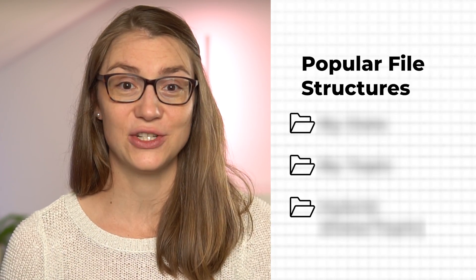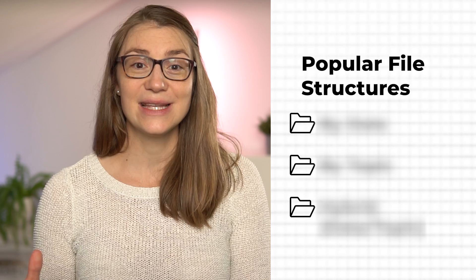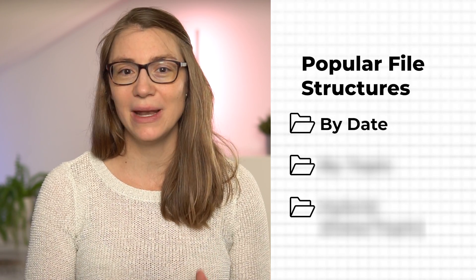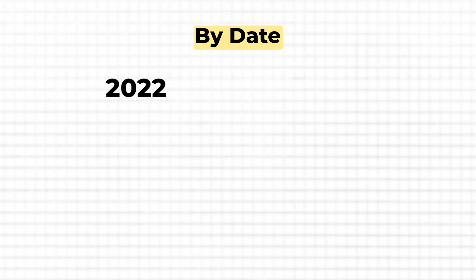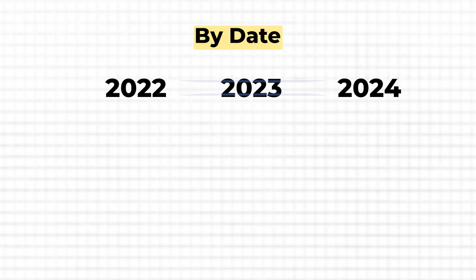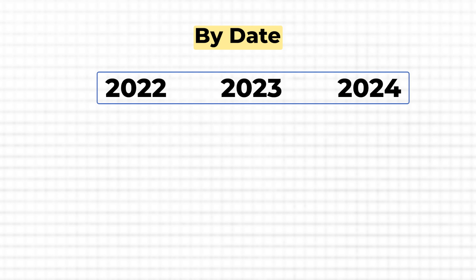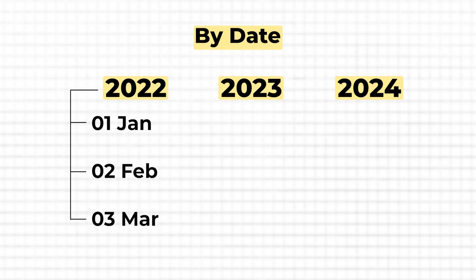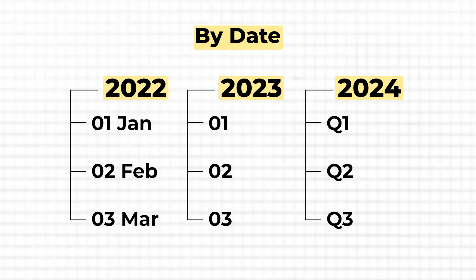Here are three popular structures that might give you inspiration to tailor your own. First, the hierarchy structure by date — probably the most common and straightforward one. It simply means organizing your photos by date, starting with the highest level being year, or maybe even decade. So you would have one main folder per year with 12 subfolders, one for each month. Alternatively, you could organize by quarter, giving you only four subfolders per year. I recommend using the month number as a prefix in the folder name so they are sorted properly — write 01 for January, 02 for February, and so on. If you just use 1 and 2, they will be sorted next to 11 and 12, which we obviously don't want.